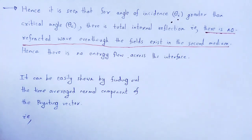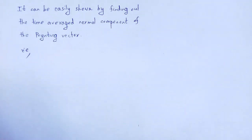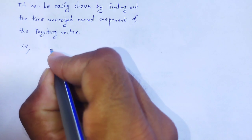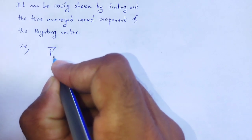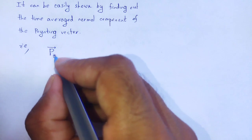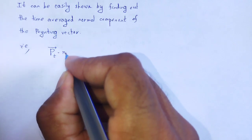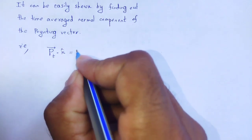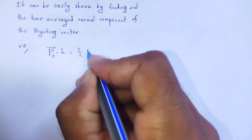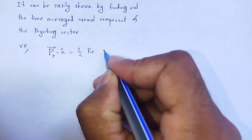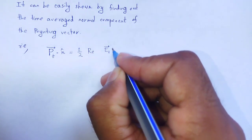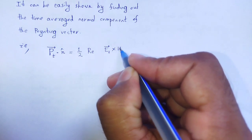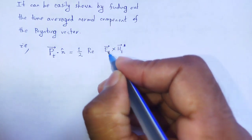Let us come to the mathematical part. The time-average normal component of the Poynting vector — where the Poynting vector for the transmitted wave is P_t — its time-average normal component is calculated as one-half times the real part of (E_t × H_t*) · n̂, taking the conjugate of H_t.